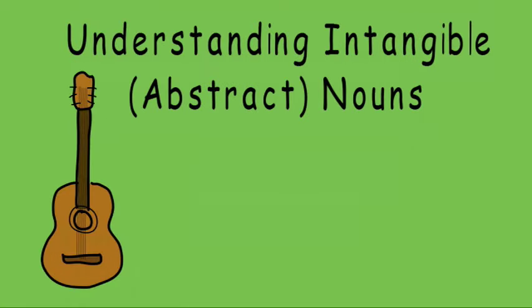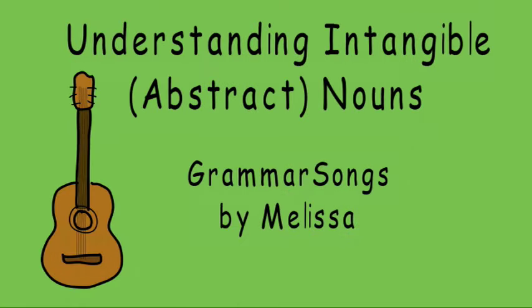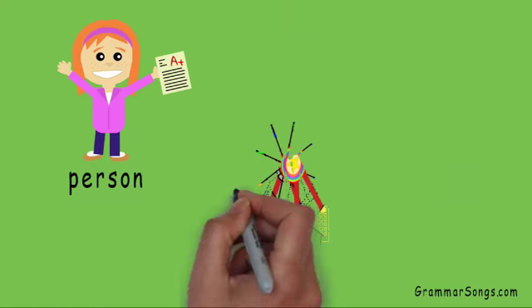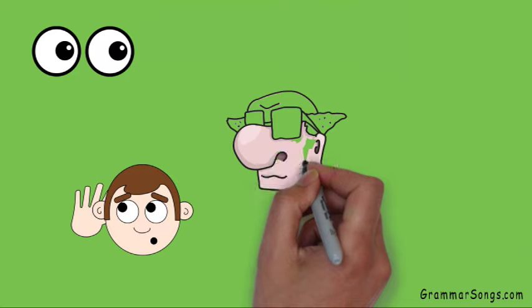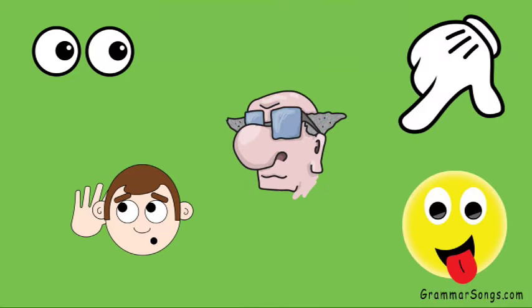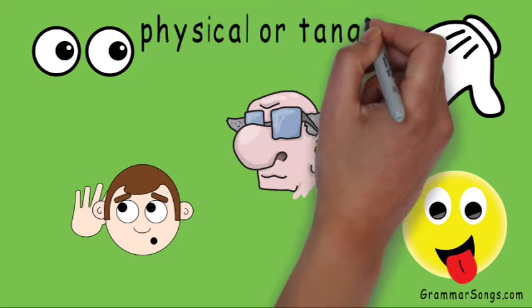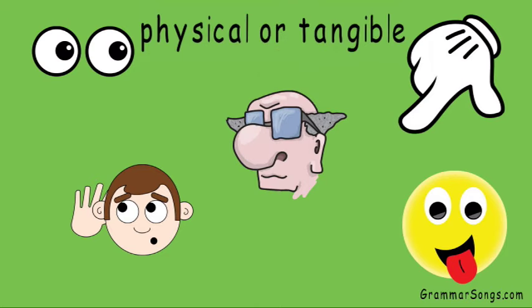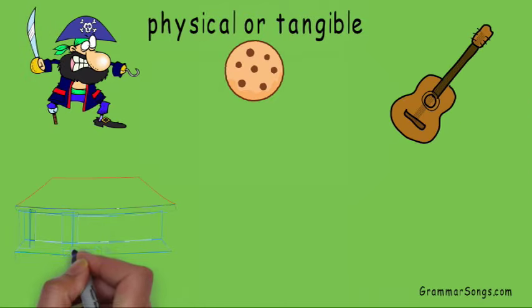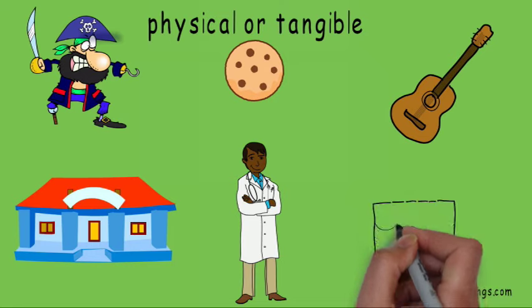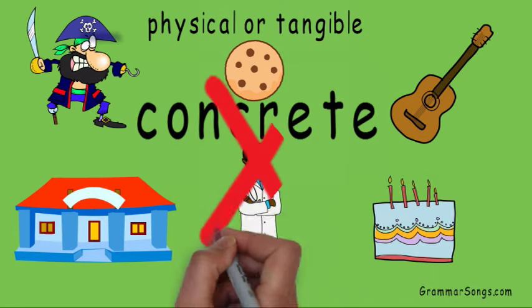Understanding Intangible Abstract Nouns at Grammar Songs by Melissa. You have learned that a basic noun can be a person, place, or thing. You've also learned that a basic noun is something you can see, hear, smell, touch, or taste. These nouns are physical or tangible because you can detect them by using your five senses. Some people also call these nouns concrete, but not all nouns are concrete.